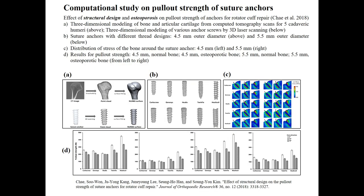In a computational study, Che and his colleagues recently simulated the pull-out strength of suture anchors. They firstly converted computed tomography scans of five cadaveric humeri into three-dimensional models for the cortical and cancellous bone and cartilage. Three-dimensional models were also constructed for five types of suture anchors with different thread designs in two sizes. The suture anchors were embedded into the bone models and a constant displacement rate was applied in three directions, with pull-out strength calculated as the maximum tensile force. The results showed that the helicoil design has higher pull-out strength compared with other thread designs. The osteoporotic bone was modeled by degrading the mechanical properties used for the cortical and cancellous bone.